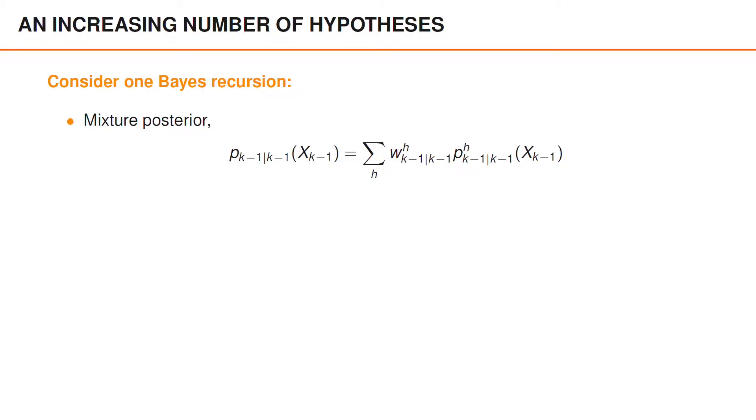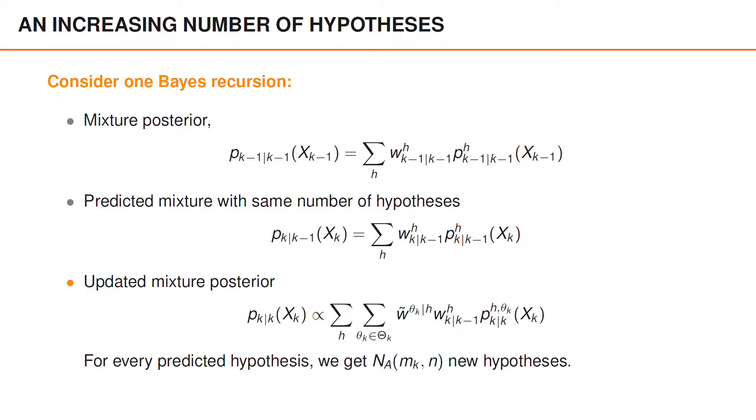Let's consider one Bayes recursion. We start with a mixture posterior, we get a predicted mixture with the same number of hypotheses, and then we have an updated mixture posterior.